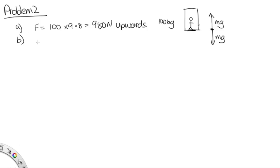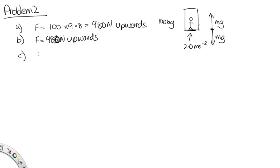In part B, the lift is moving up with constant velocity. When there's constant velocity, acceleration is zero, so there are no net forces involved. The force remains 980 newtons upwards. Part C: the lift is accelerating upwards at 2 m/s². The floor pushes with additional acceleration-related force, so F = m(g + a) = 100 × (9.8 + 2.0) = 100 × 11.8 = 1,180 newtons upwards.